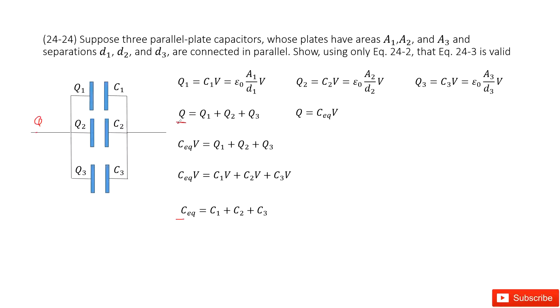We write it there. Now we can write Q as the equivalent capacitance times V, the voltage for this circuit. Because this is the definition - the charge equals capacitance times the voltage. So this is the equivalent capacitance times the potential.